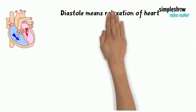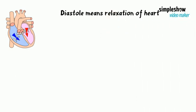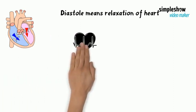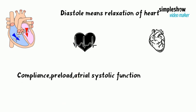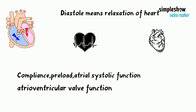The diastolic function of the heart means relaxation of the ventricular myocardium. Diastole is affected by many factors such as heart rate, ventricular function and compliance, preload, atrial systolic function, and atrioventricular valve function. For more information, refer to Part 2 of our Diastology Series.